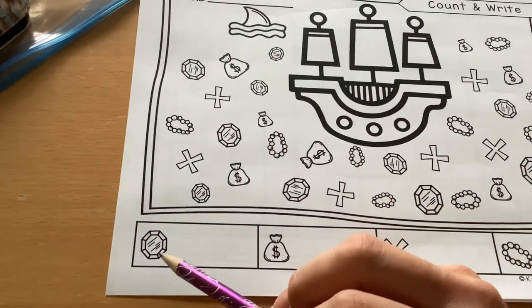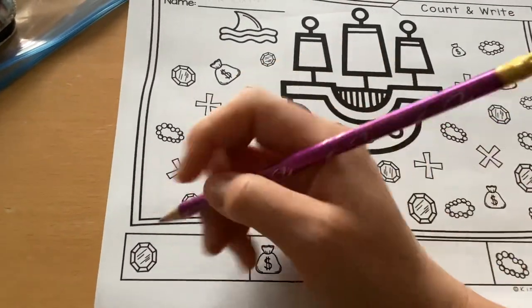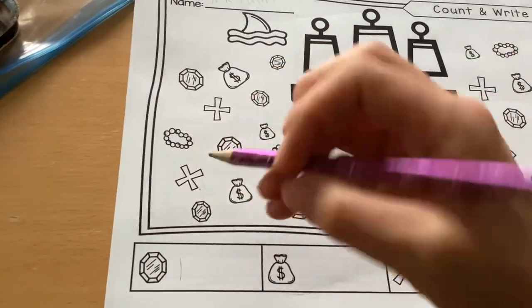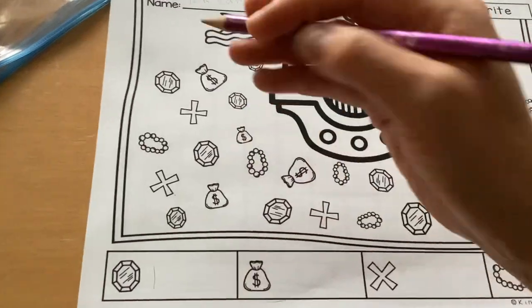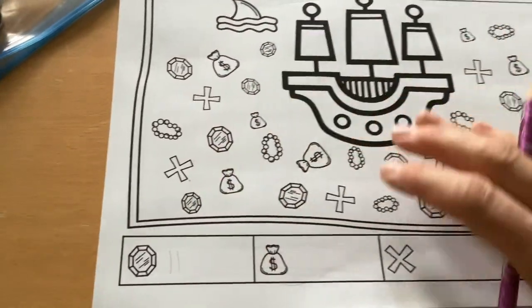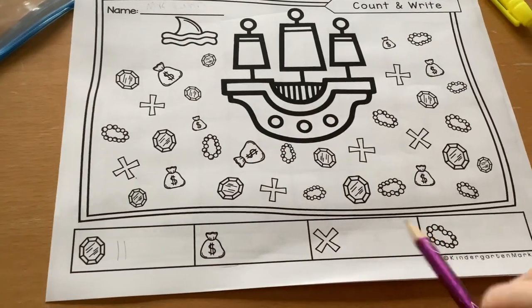Alright, so then you're gonna find the window. Whenever you find a window, you're gonna put a tally and then color it in. Oh, here's another window. You're gonna color it and tally it. You're gonna keep on going until everything is colored in and tallied.